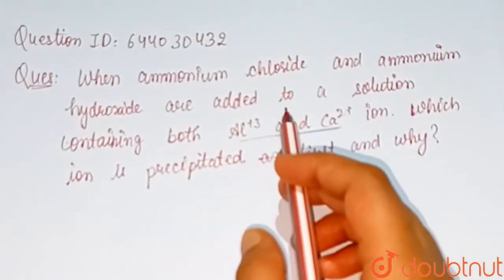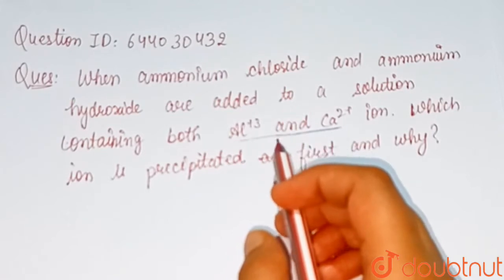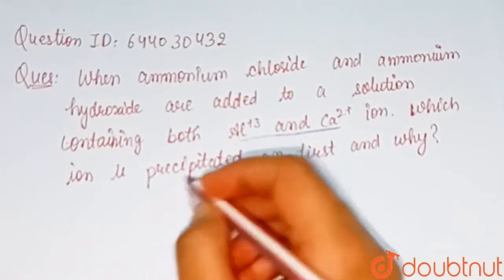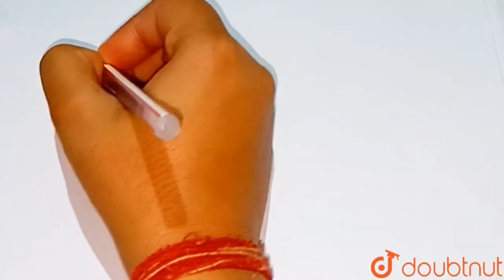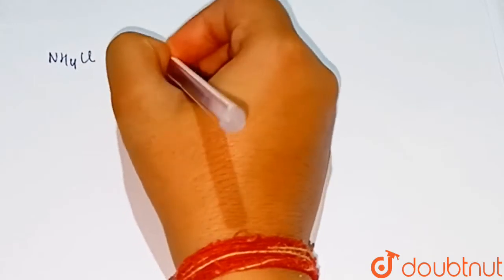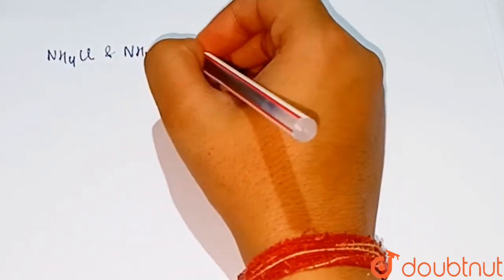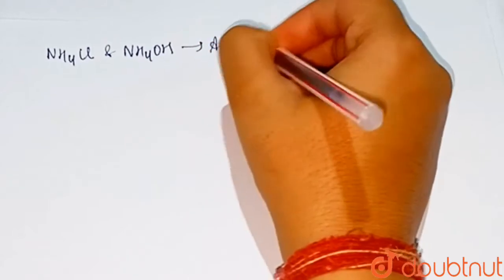and ammonium hydroxide are added to a solution containing both Al³⁺ and Ca²⁺ ions, which ion is precipitated first and why? When ammonium chloride and ammonium hydroxide are added to a solution containing both Al³⁺ and calcium 2+ ions